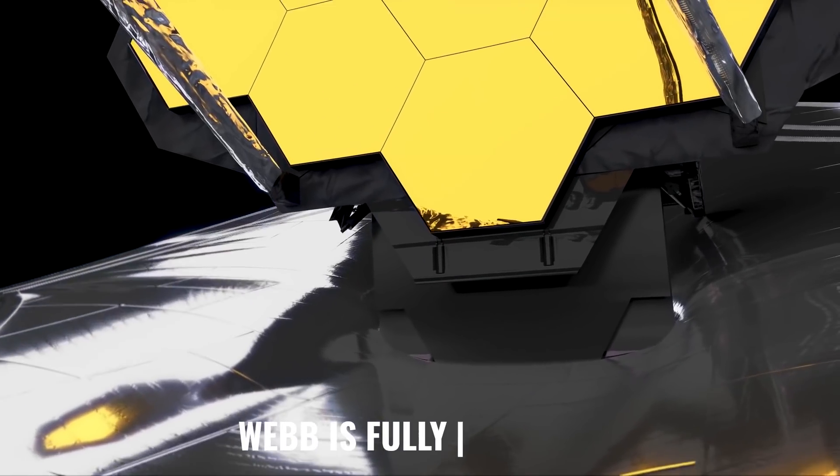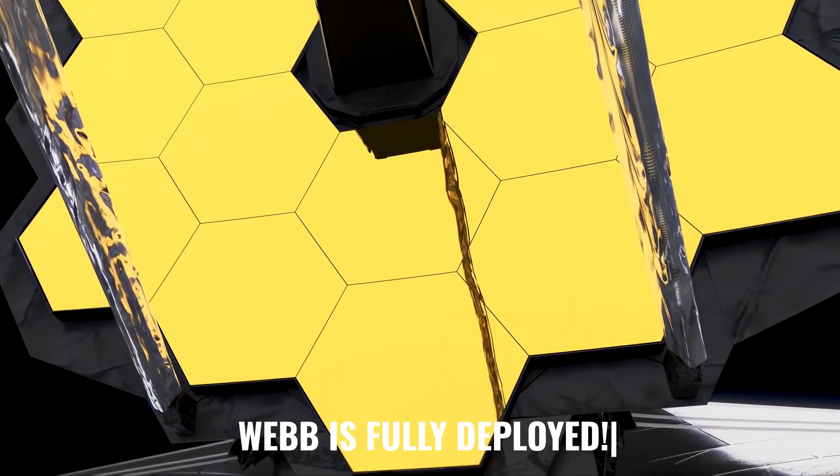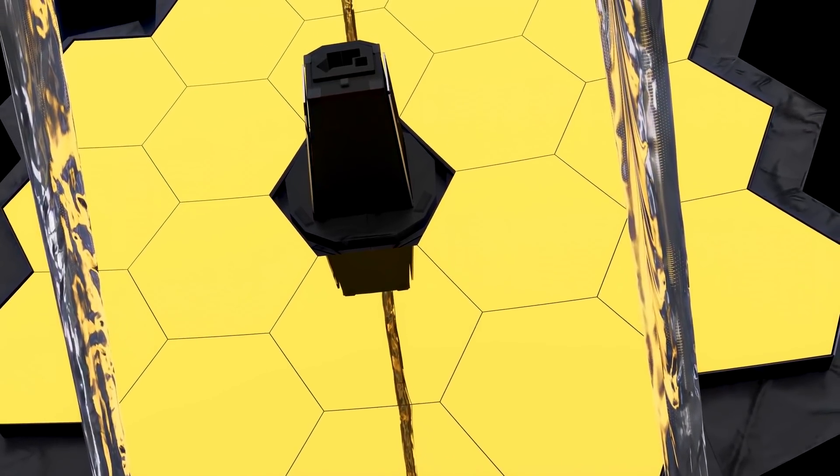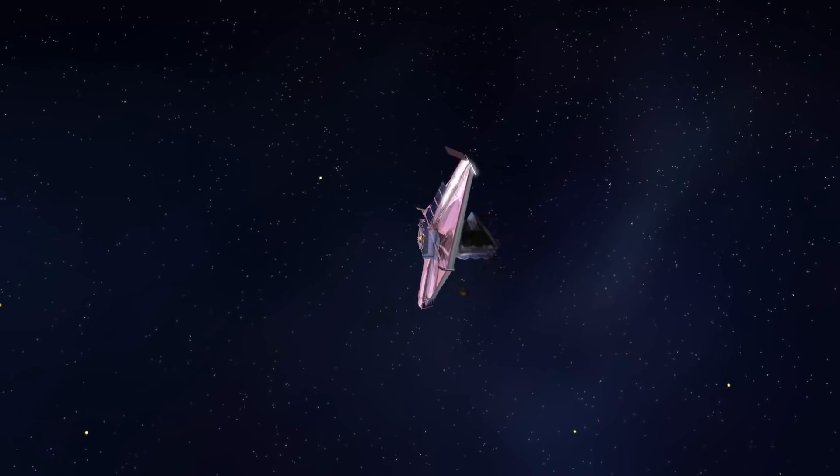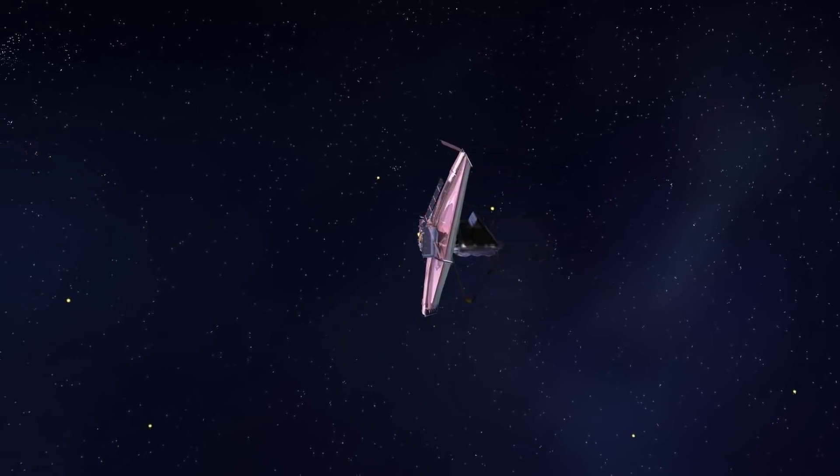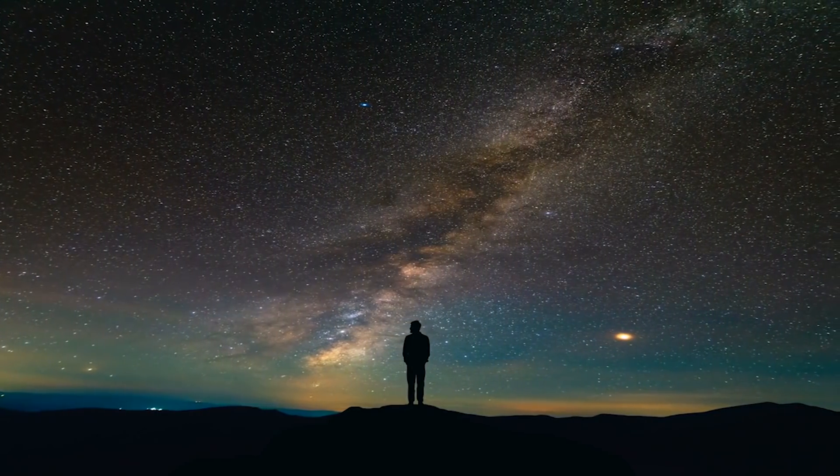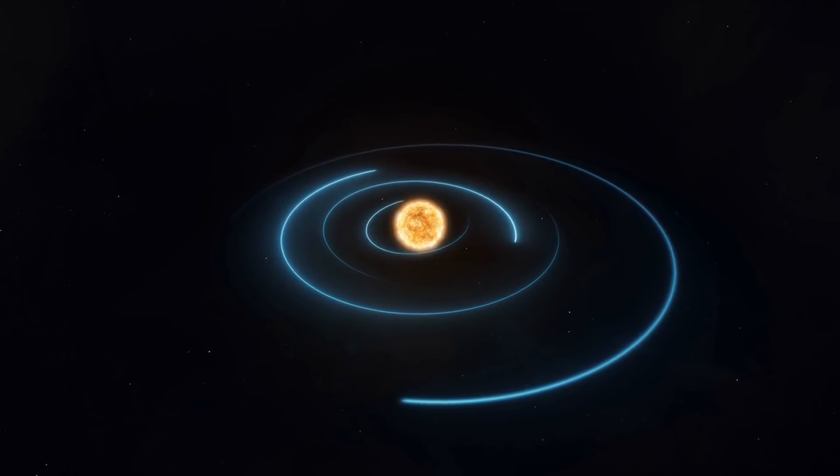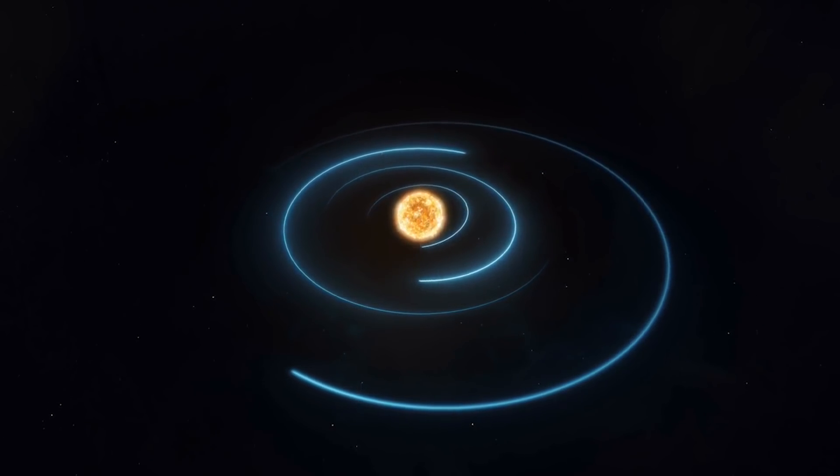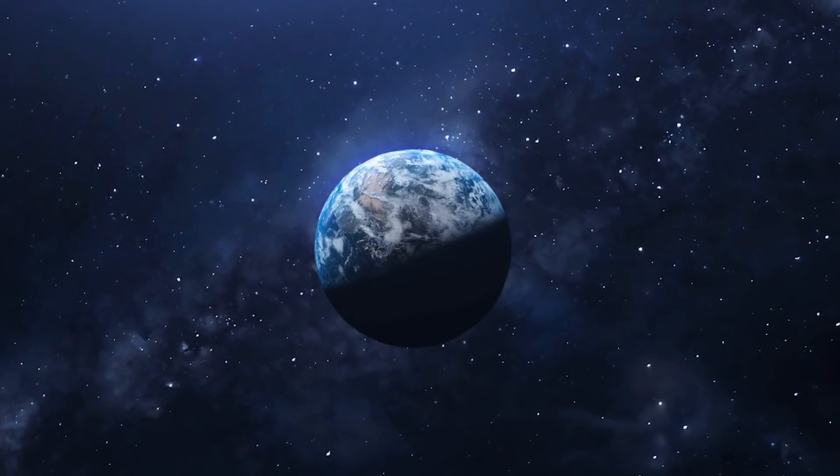Webb is fully deployed. The largest, most complex telescope ever launched into space is fully deployed. Webb will be the premier observatory of the next decade, serving thousands of astronomers worldwide. It will study every phase in the history of our universe, ranging from the first luminous glows after the Big Bang, to the formation of solar systems capable of supporting life on planets like Earth, to the evolution of our own solar system.